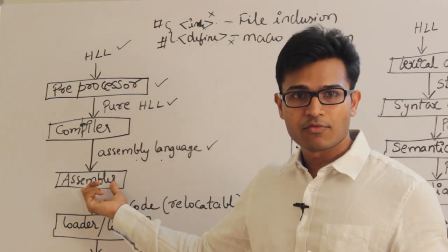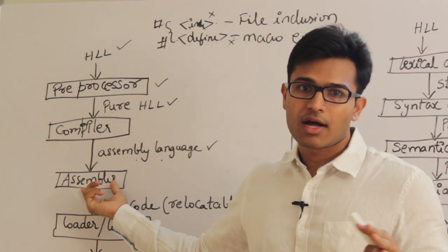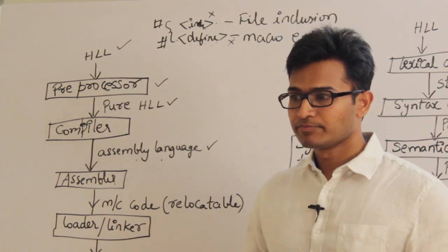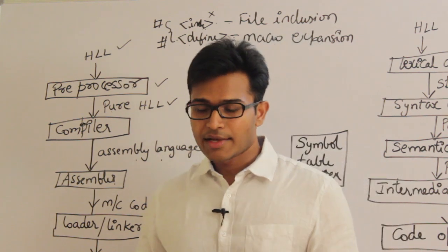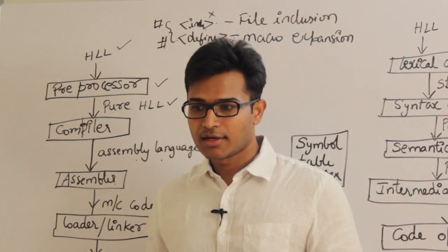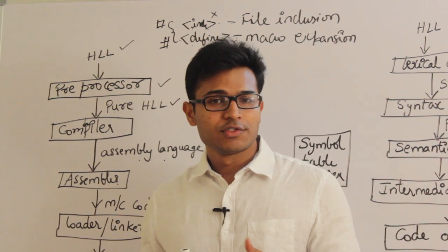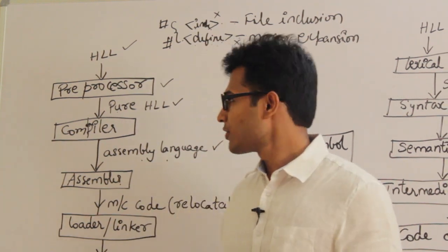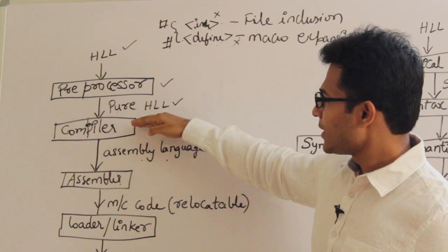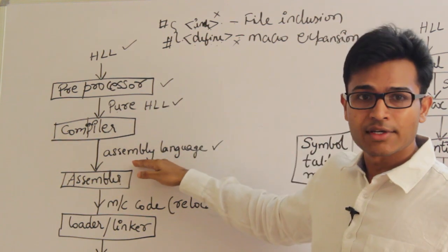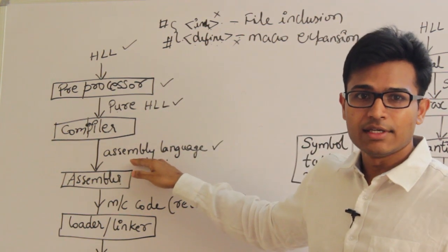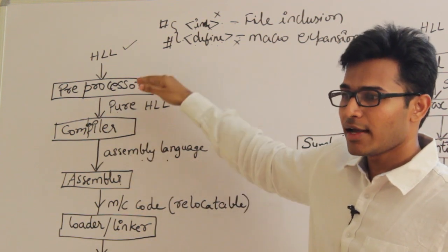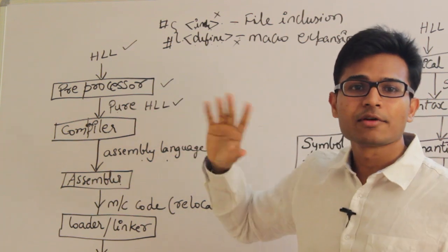An assembler for one platform will not work for another platform. You can think of an assembler as a manual — a manual using which you can only operate one instrument; you cannot operate another. Therefore the main purpose of the compiler is to generate assembly-level language. Assembly-level language is not entirely in zeros and ones and not entirely high-level language — it is somewhat intermediate.